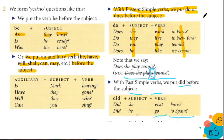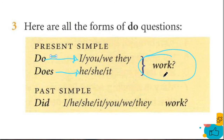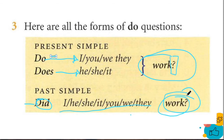La verdad, nada de lo que he explicado el día de hoy es nuevo — solo hemos visto clases anteriores, solo para refrescar. Aquí tienen todas las formas del do. Recuerden que usamos do con ciertos pronombres y does con otros. Y tienes el verbo al final más el signo de pregunta. Para el past simple, tenemos did con todos los pronombres y el verbo va en presente — la regla del pasado se anula porque el verbo va en presente. Eso lo hemos visto en clases anteriores y estoy bastante seguro que no es nuevo para ustedes.